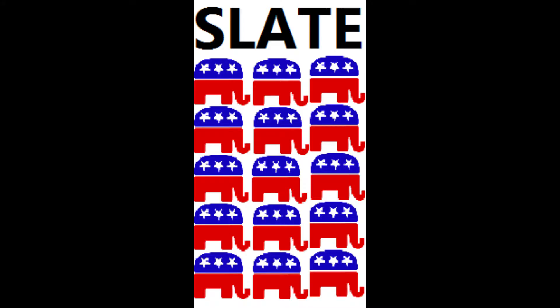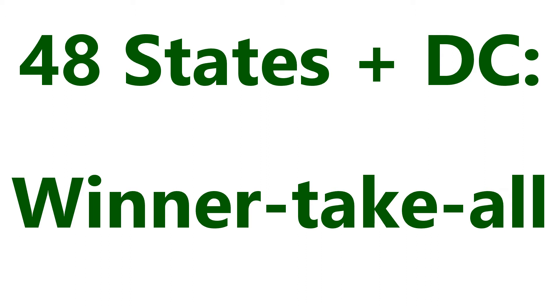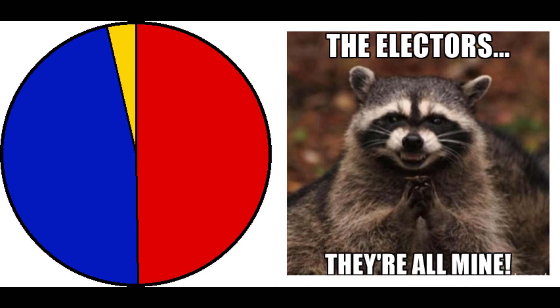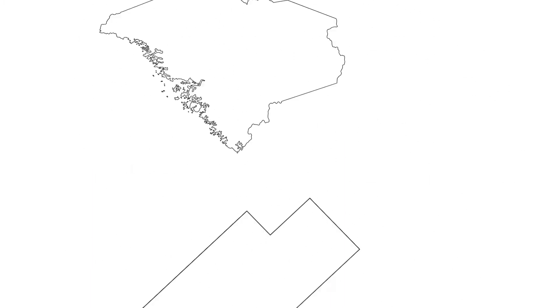Each state's party will create a slate or set of electors. Generally, whichever candidate wins in your state gets all the electors for that state. Specifically, 48 states and DC will award all of their electors on a winner-take-all basis, which means whoever gets the most votes in that state gets all of the electors for that state, while Maine and Nebraska have a more complex process.